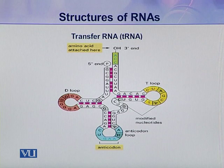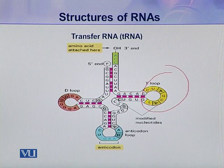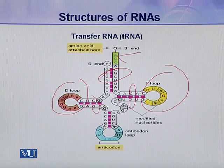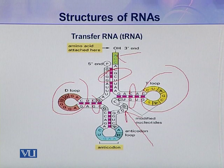In the tRNA structure, there are a number of loops which are hairpin loops, and at several points it is double stranded while at other points it is single stranded. It also contains a bulge. So this is the secondary structure of a tRNA molecule.